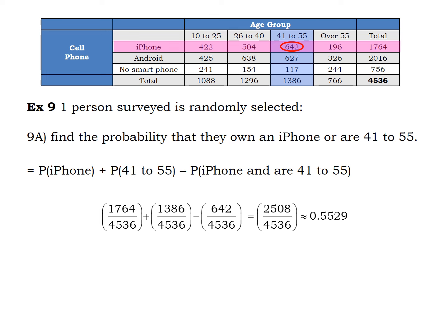Take the probability of A plus the probability of B minus the probability of A and B, but write it out in the context of the problem. Don't use just A and B — they're easy to get lost. Write out the probability of this plus the probability of that, minus the probability of this and that.